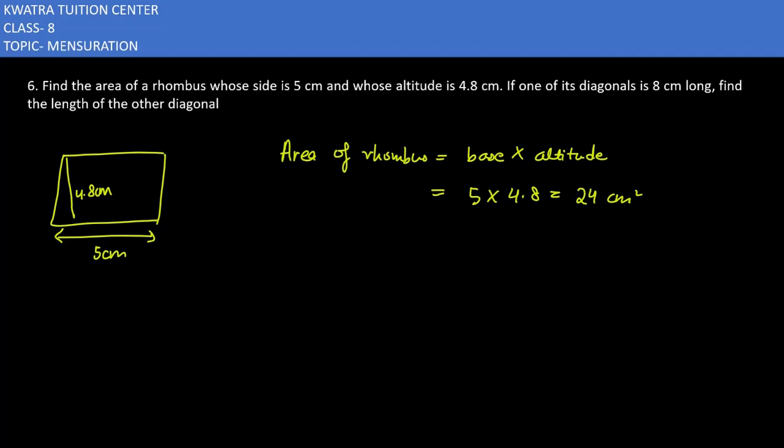Now d2 we have to find out, so we will use the other formula: area of rhombus which is half into d1 into d2. Area of rhombus, what do you substitute? 24. Half as it is, d1 value is 8, and d2 as it is. 2 and 8 cancel to 4. 24 and 4 you divide.